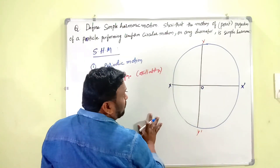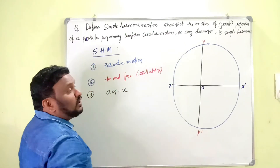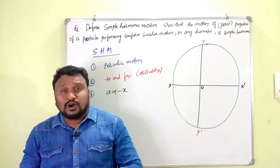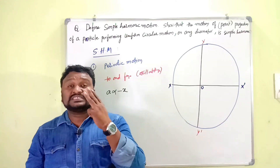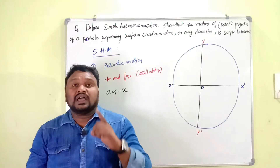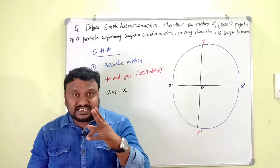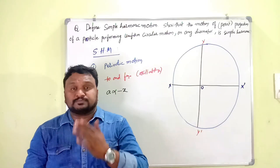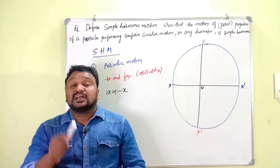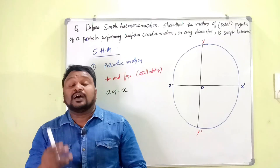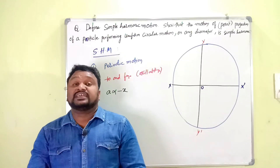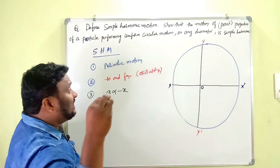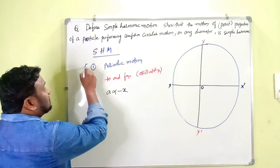First, what is Simple Harmonic Motion? To know whether the motion of any particle is Simple Harmonic, the particle must obey three conditions. First, the particle must have periodic motion. Second, the particle must exhibit oscillatory motion — that means to-and-fro motion. Third, the acceleration of the particle is directly proportional to the displacement of the particle and they must be in opposite directions.